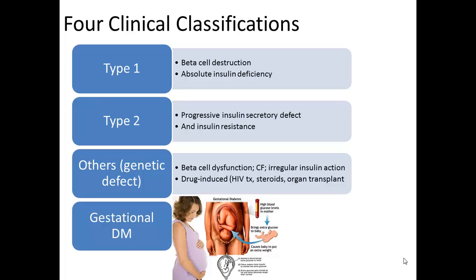There's also an emerging type 3 diabetes that has been suggested, at least at this point, in children. It is a combination of insulin deficiency and beta cell resistance.